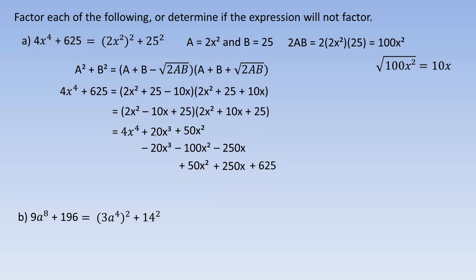Lastly, 25 times each term: 25 times 2x squared is 50x squared, 25 times 10x is 250x, and 25 times 25 is 625. The reason I did this in three lines is so the like terms are on top of one another. The 20x cubed terms are opposites and add to zero. 50x squared and 50x squared add to 100x squared, which is opposite the negative 100x squared — so all that adds to zero. The 250x terms are opposites and add to zero. So we're just left with 4x to the fourth plus 625, demonstrating these are the correct factors.